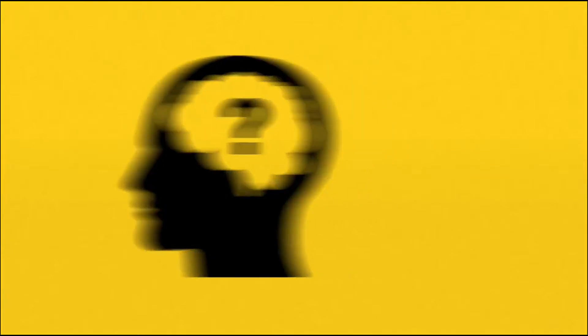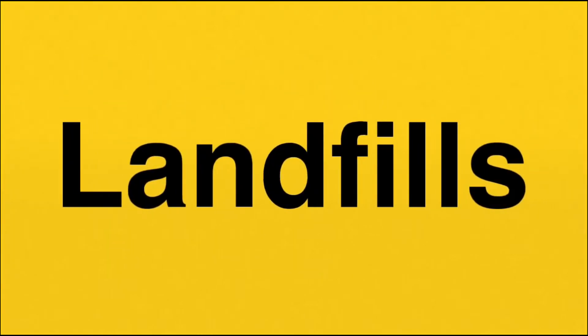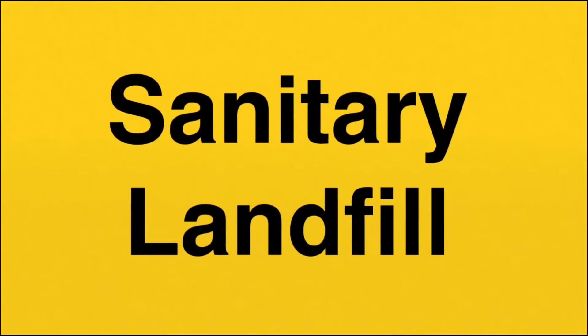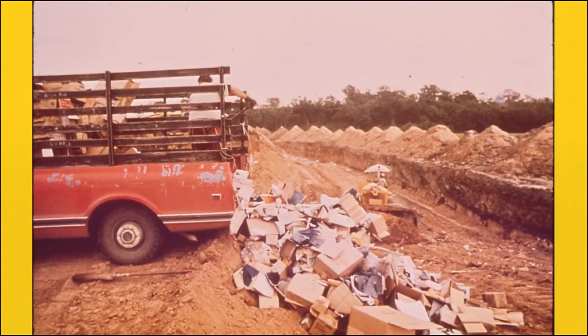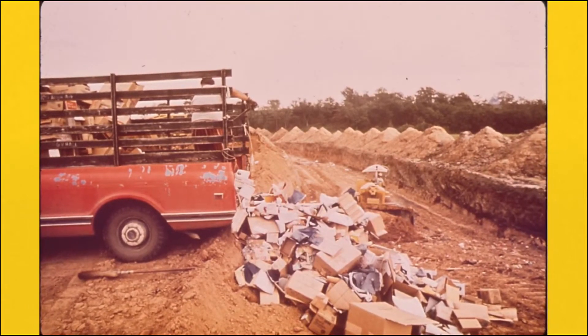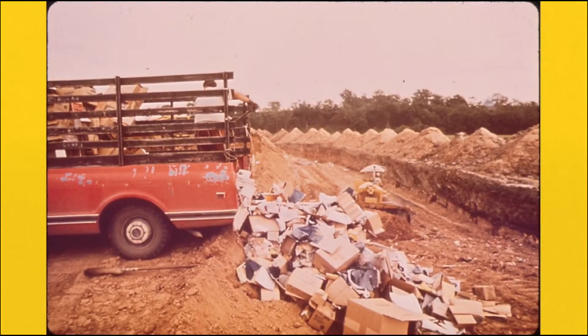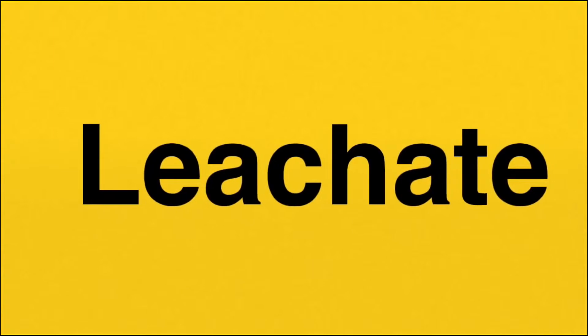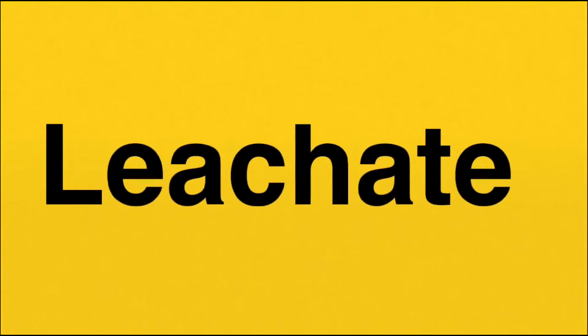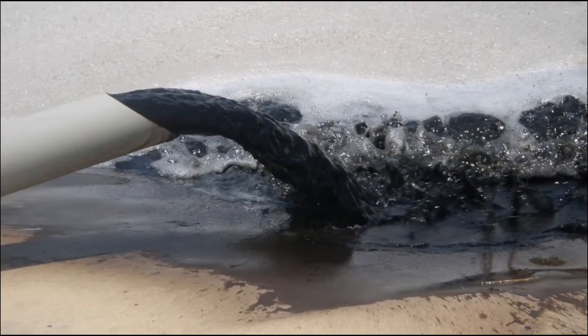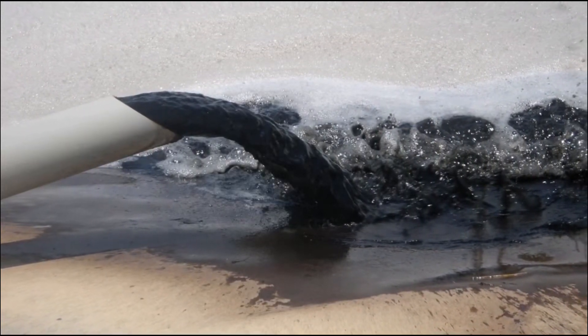As a solution to dealing with household waste, we have created landfills. The first type, which houses normal household waste, is called a sanitary landfill. At the bottom of a sanitary landfill, there is a liner made out of clay that stops water and wastes from leaching into the groundwater. Leachate is the liquid that results as wastes decompose and rainwater filters down through the landfill, and it would be problematic if it were to contaminate the groundwater.